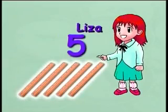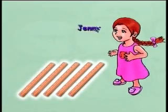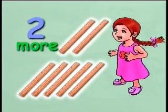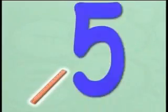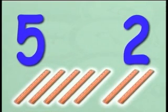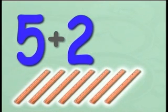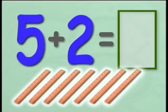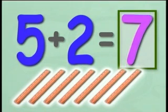Lisa has five rulers. Jenny has two rulers more than Lisa. How many rulers does Jenny have? If Lisa has five rulers and Jenny has two more than Lisa, then we must add two to five to find out the number of rulers Jenny has. So, five plus two equals seven. Jenny has seven rulers.